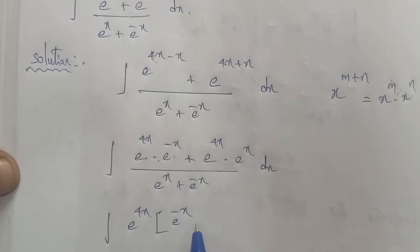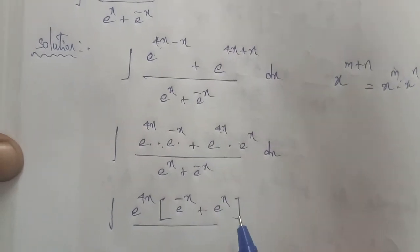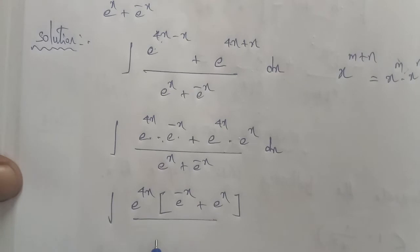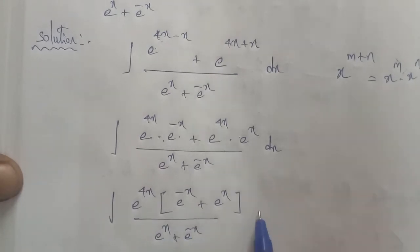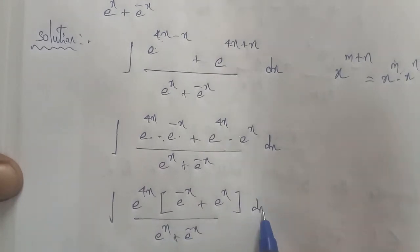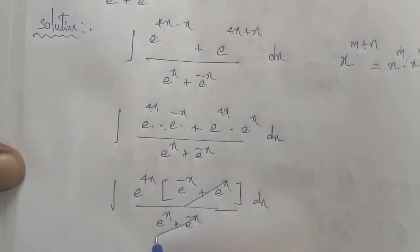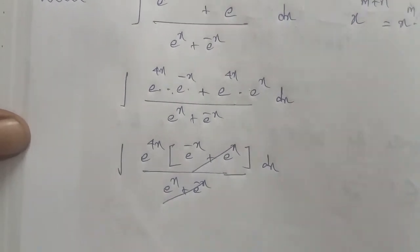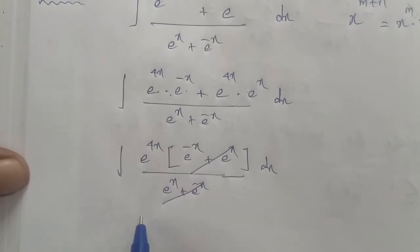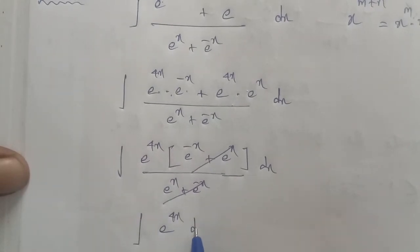The numerator has e power x plus e power minus x, and the denominator also has e power x plus e power minus x, into dx. So we compare and cancel these common terms. The remaining term is just e power 4x. Therefore, we get the integration of e power 4x into dx.